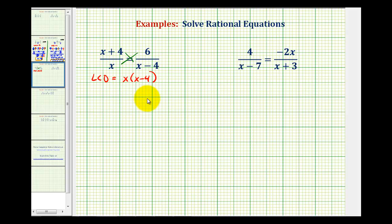But just to keep it consistent, on this example, I'm going to go ahead and multiply both sides of the equation by the LCD. So we have the quantity x plus 4 all over x equal to 6 over the quantity x minus 4.